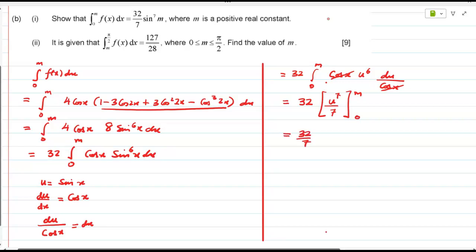So 32 over 7, now put your u back. U is what? So 32 over 7, correct? Sin 7m minus sin 7, 0 and sin 0 is 0. Since sin 0 is 0, so we will be left with sin this way.